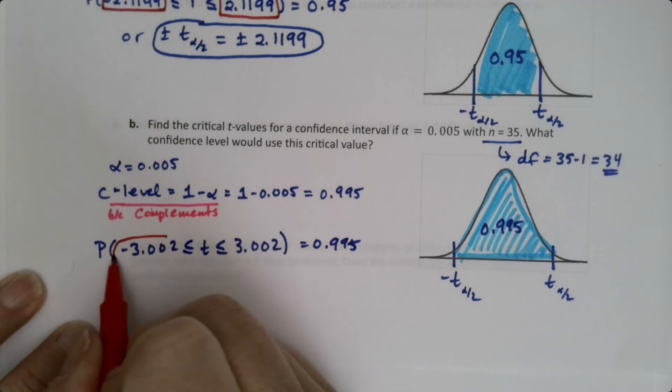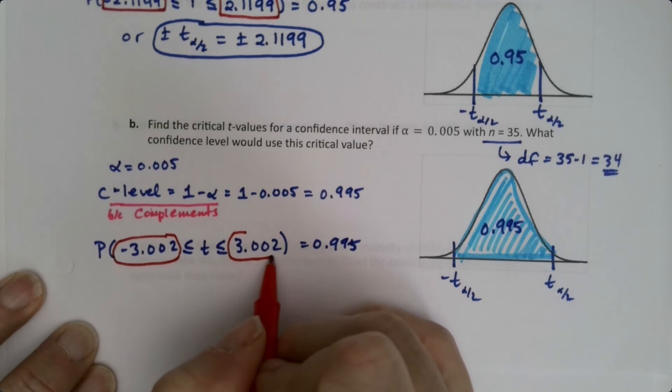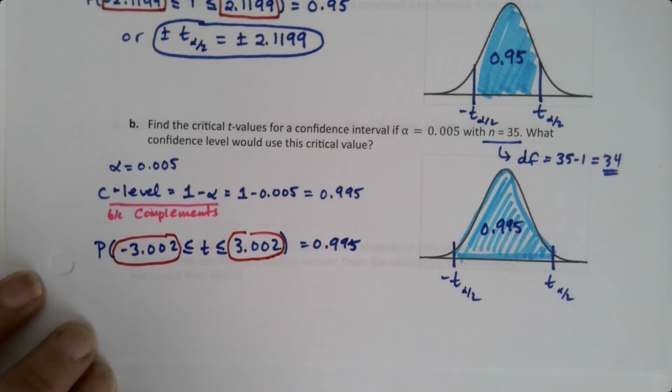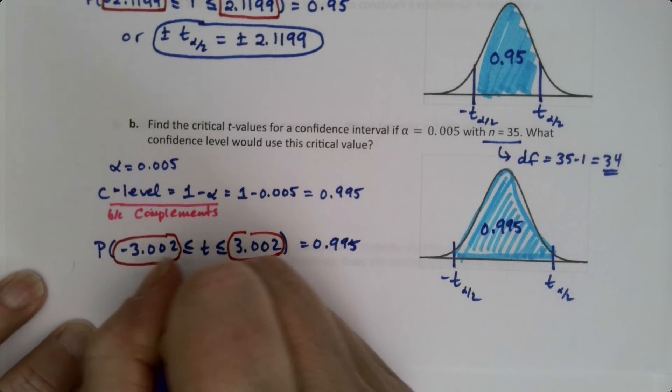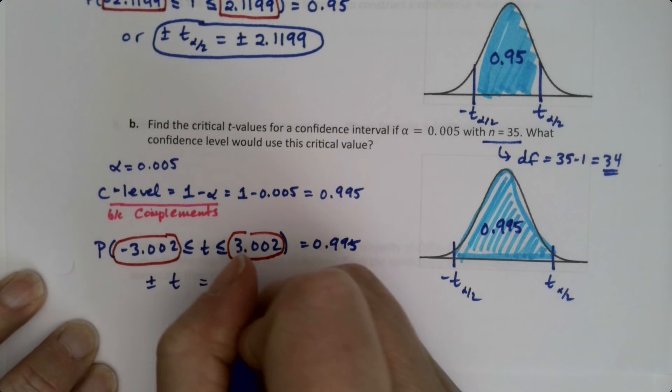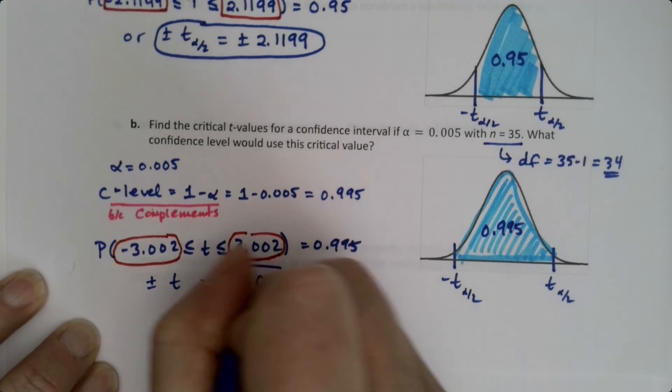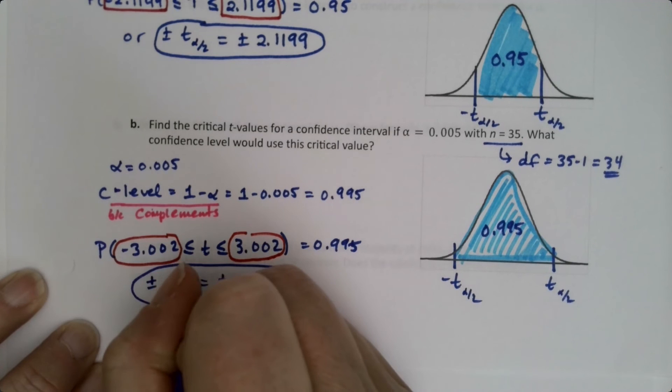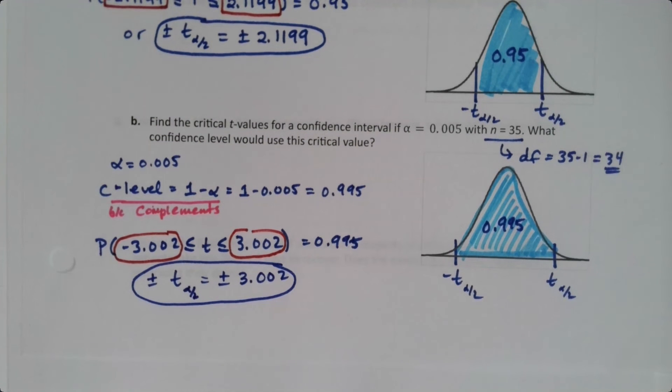So it's negative 3.002 or positive 3.002. So those are the answers. You can write it like this. That's fine, and that kind of shows work. Or you can write it like this. And if you want to put the little subscript there, you can. You won't be marked wrong if you're missing the little alpha over 2 subscript. It's fine. All right, that's it. So that wasn't too bad.